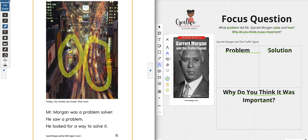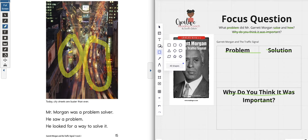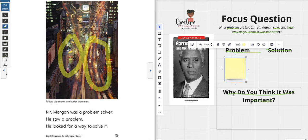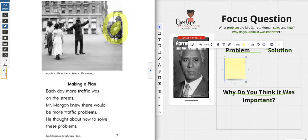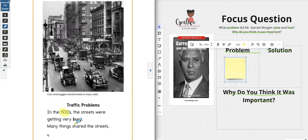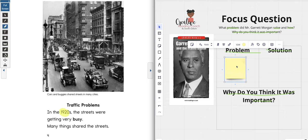Let's use our graphic organizer. I have my sticky note — the first thing I'm going to do is place it on the problem box. What is the problem in the story? I want to make sure I go back in the text and find exactly what the problem was. It says: in the 1920s the streets were getting very busy and many things shared the streets. So we're going to say: in the 1920s, the streets were busy.